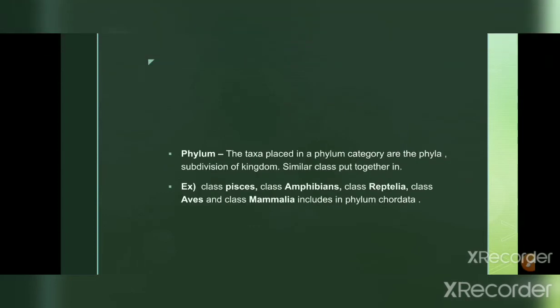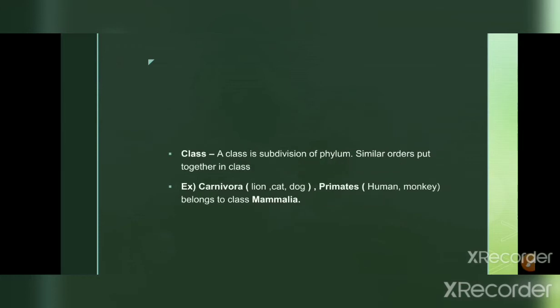The next category is phylum, grouped right after kingdom. The purpose is to find certain physical similarities among organisms within a kingdom. Various phyla include Chordata, Arthropoda, Porifera, Annelida, and Mollusca. Phylum Chordata includes classes such as Pisces, Amphibia, Reptilia, and Mammalia. The class further sorts organisms of a phylum. There are around 108 different classes in kingdom Animalia introduced after the 19th century as proposed by Linnaeus.